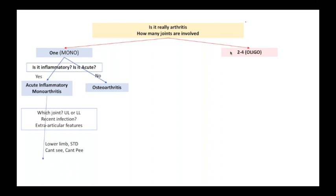So if you get an answer that it is the lower limb which is involved, you have recent sexually transmitted disease evidence or evidence of recent gastroenteritis, and you have a patient who can't see, who can't pee and who can't climb a tree because of his lower limb involvement, then you are dealing with a reactive arthritis.